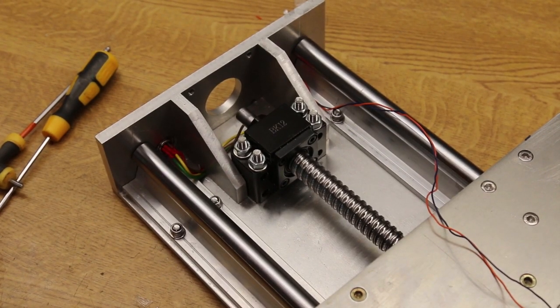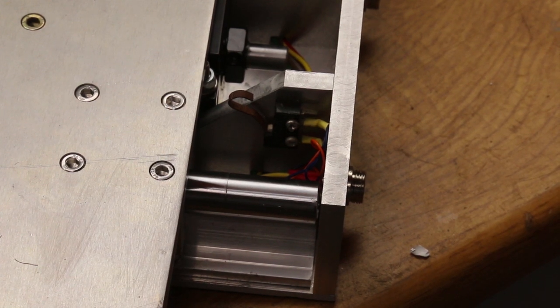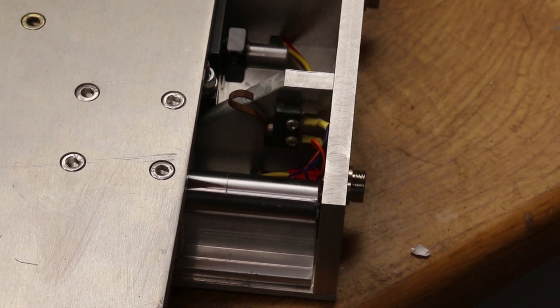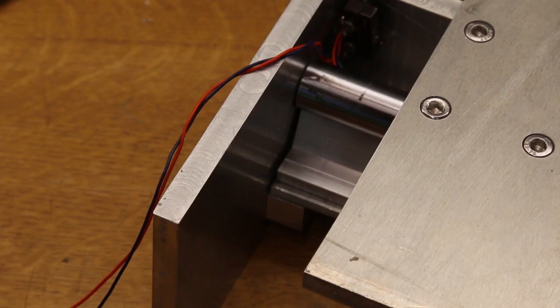And here it is installed. The rear limit switch was fitted in one of the side brackets and the arm adjusted to trigger about 1mm before the end of travel. And at the other end.